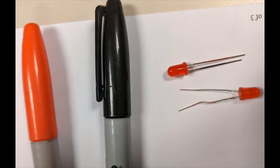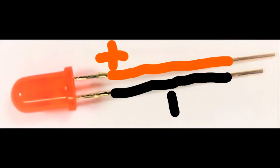So my solution, use a red sharpie to mark the anode and a black sharpie to mark the cathode.